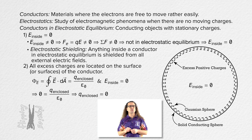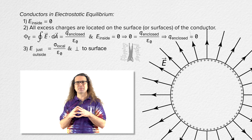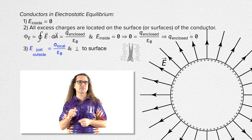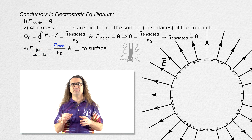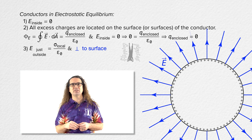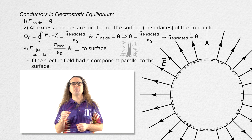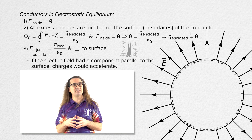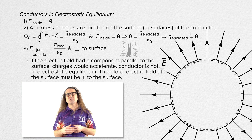Thank you, Bobby. The third thing you need to remember about conductors in electrostatic equilibrium is that the electric field just outside the surface of a conductor in electrostatic equilibrium is perpendicular to the surface and equals the local surface charge density divided by the permittivity of free space. Local surface charge density means the surface charge density right near the location of the electric field. The electric field at the surface is always perpendicular to the surface. If the electric field had a component parallel to the surface, the charges would experience an electrostatic force parallel to the surface, which would cause them to accelerate and the conductor would no longer be in electrostatic equilibrium. Therefore, the electric field at the surface of a conductor in electrostatic equilibrium must be perpendicular to the surface.